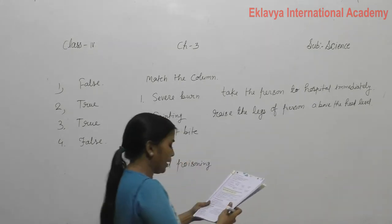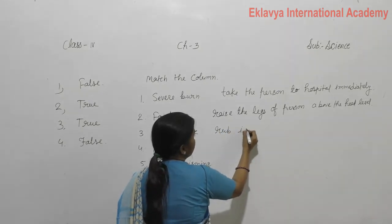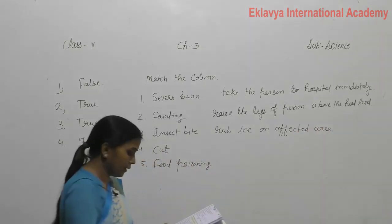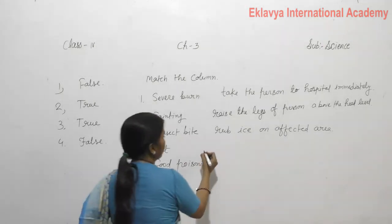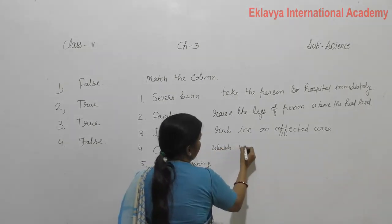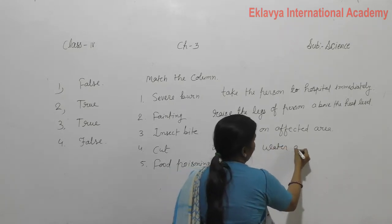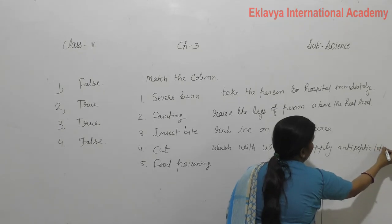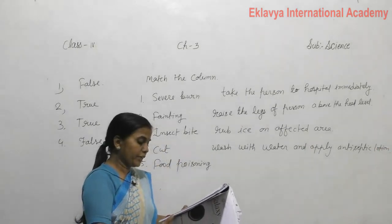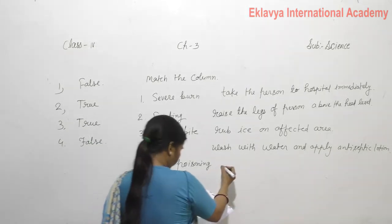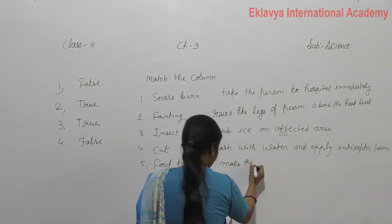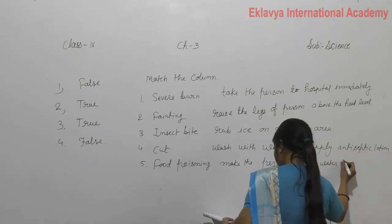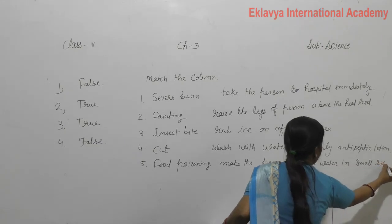Third one is insect bite: rub ice on the affected area. Fourth, cut: wash with clean water and apply antiseptic lotion. Fifth, food poisoning: make the person drink water in small sips. Thank you.